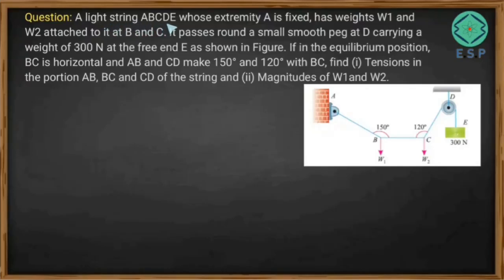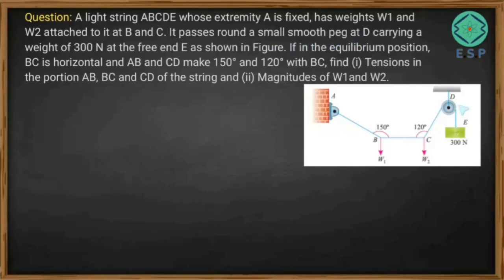We have a light string ABCDE whose extremity A is fixed. Weights W1 and W2 are attached at points B and C respectively. The string passes round a small smooth peg at D, carrying a weight of 300 newtons at the free end E.